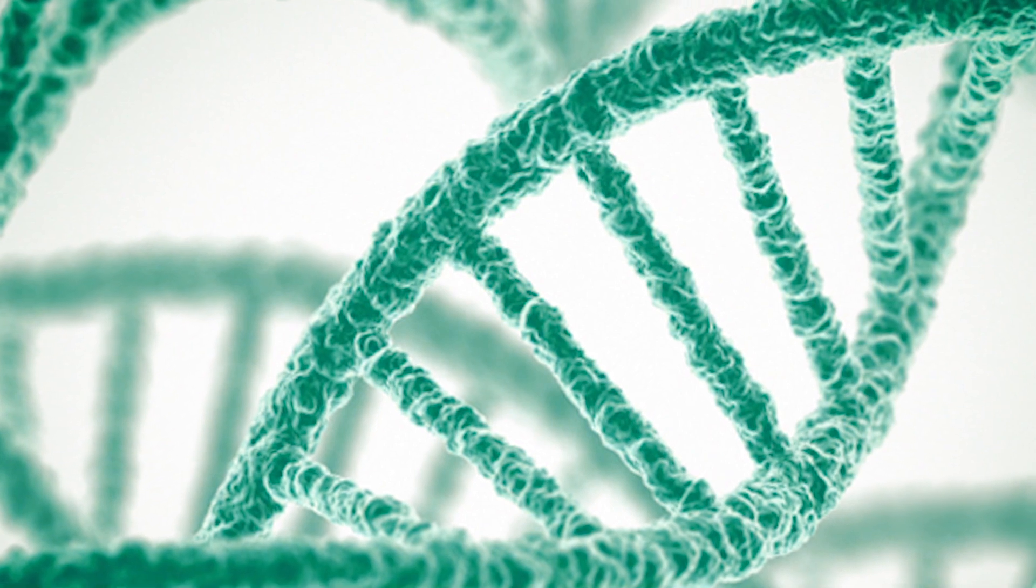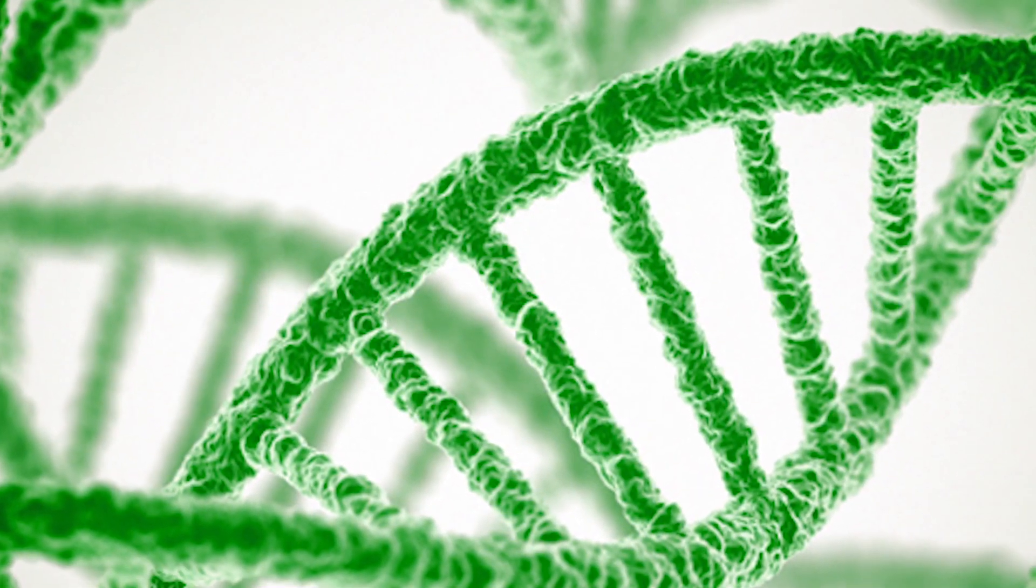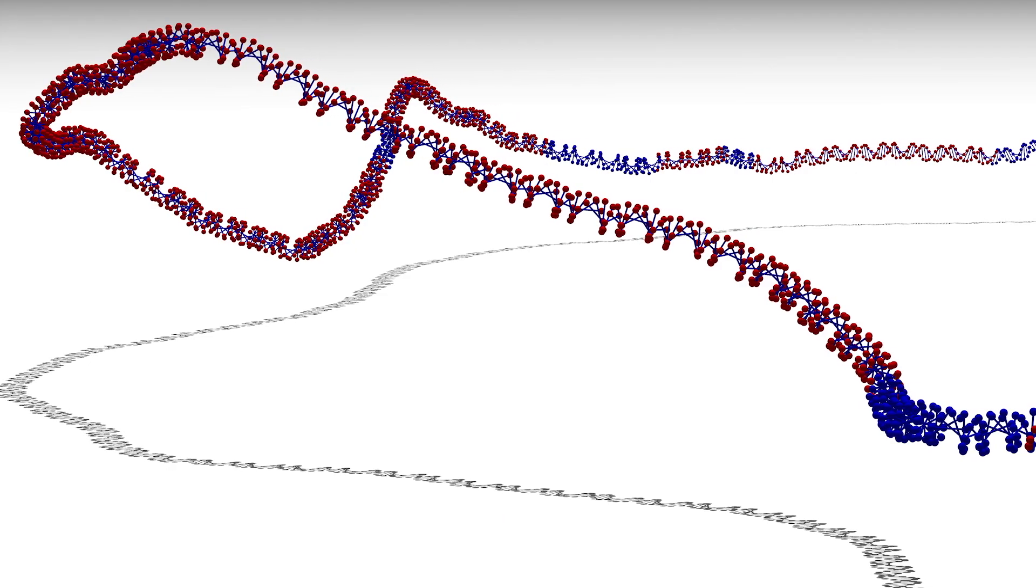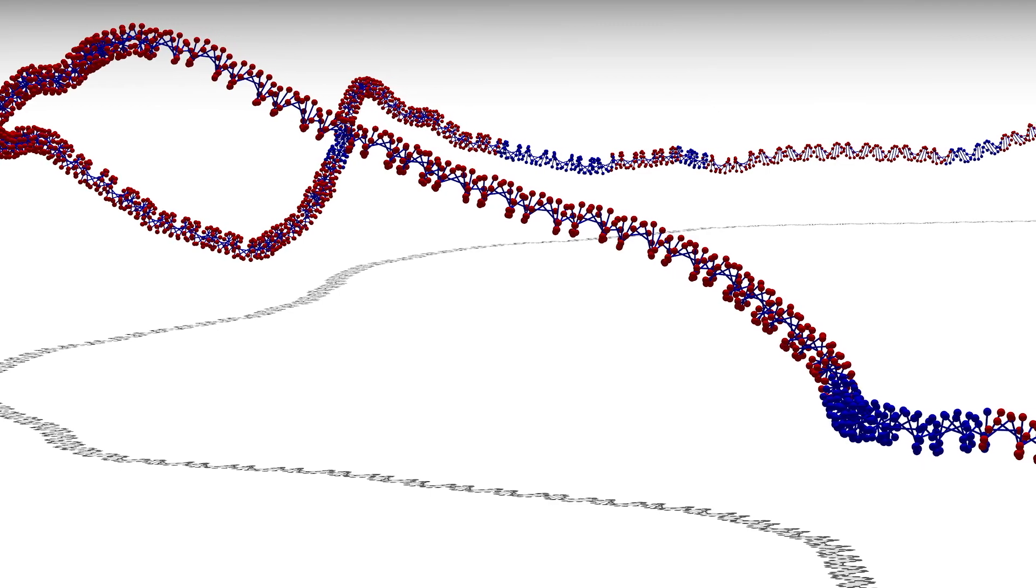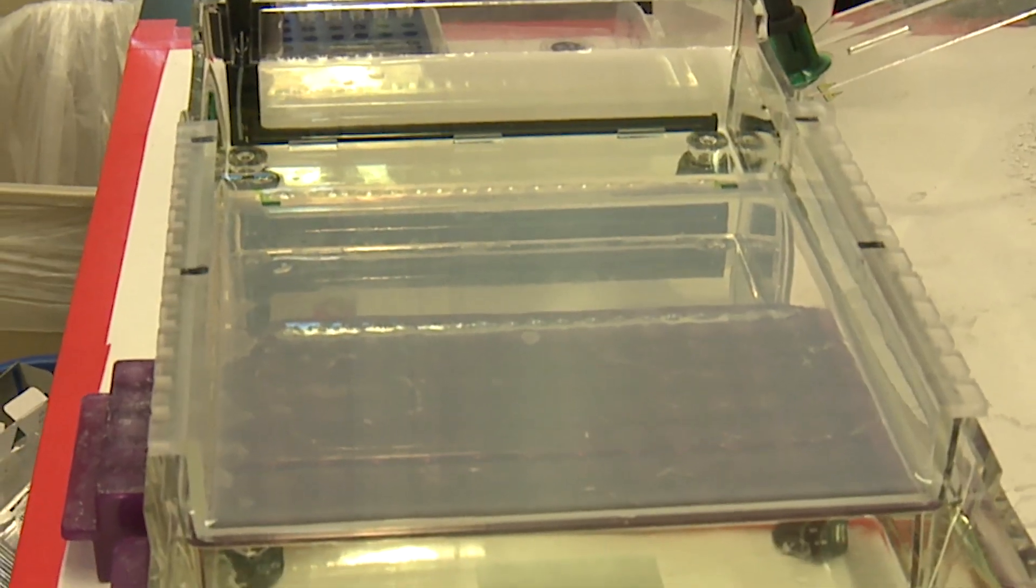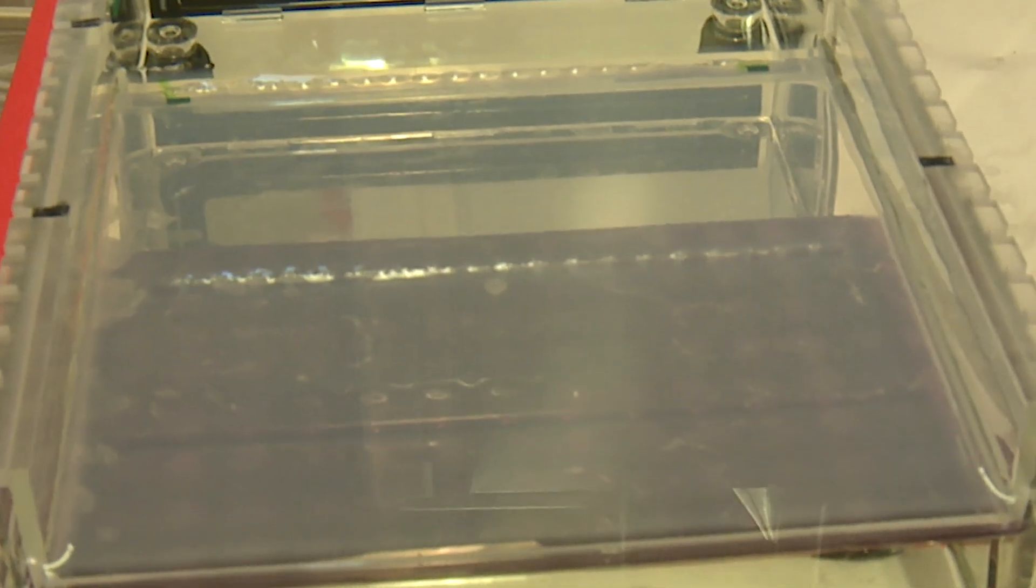The way that DNA is separated on this gel is by size. The smaller pieces of DNA move a bit faster in the gel, and the larger pieces of DNA take a longer time. And so the larger pieces of DNA are going to be closer to where the samples started.